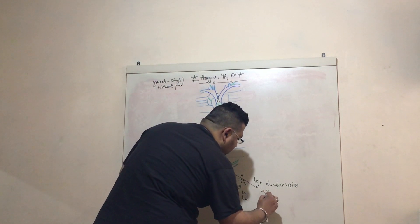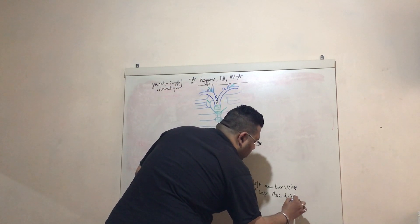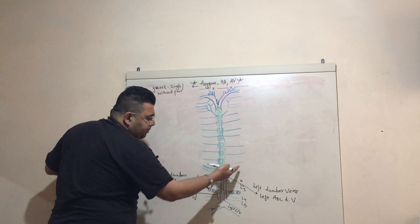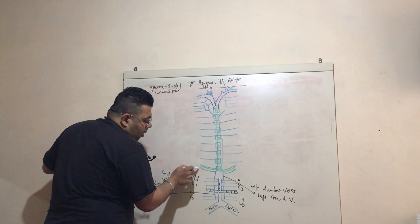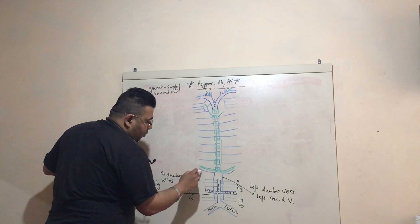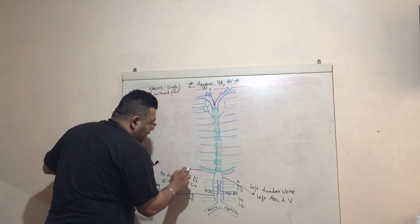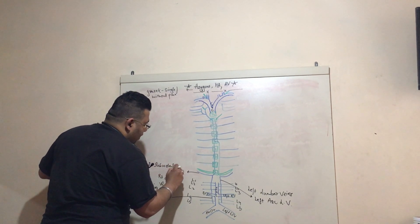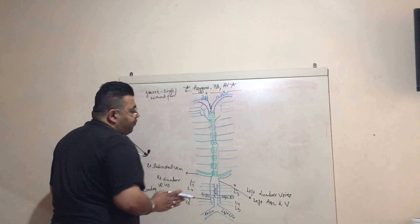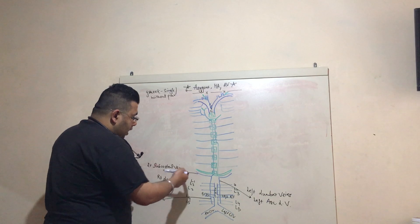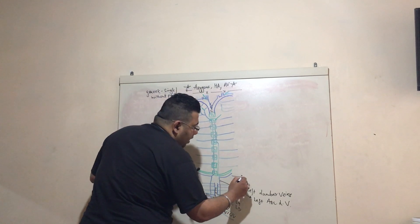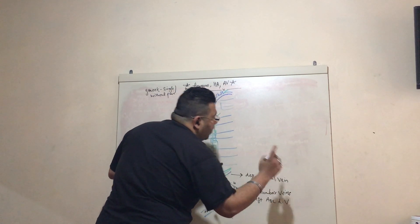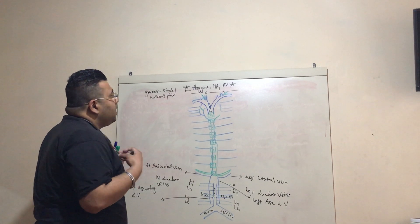Just below the spinous process of the T12 vertebra, there is one venous vessel known as the right subcostal vein, because it is below the costal surface. Similarly, we also have the left subcostal vein.